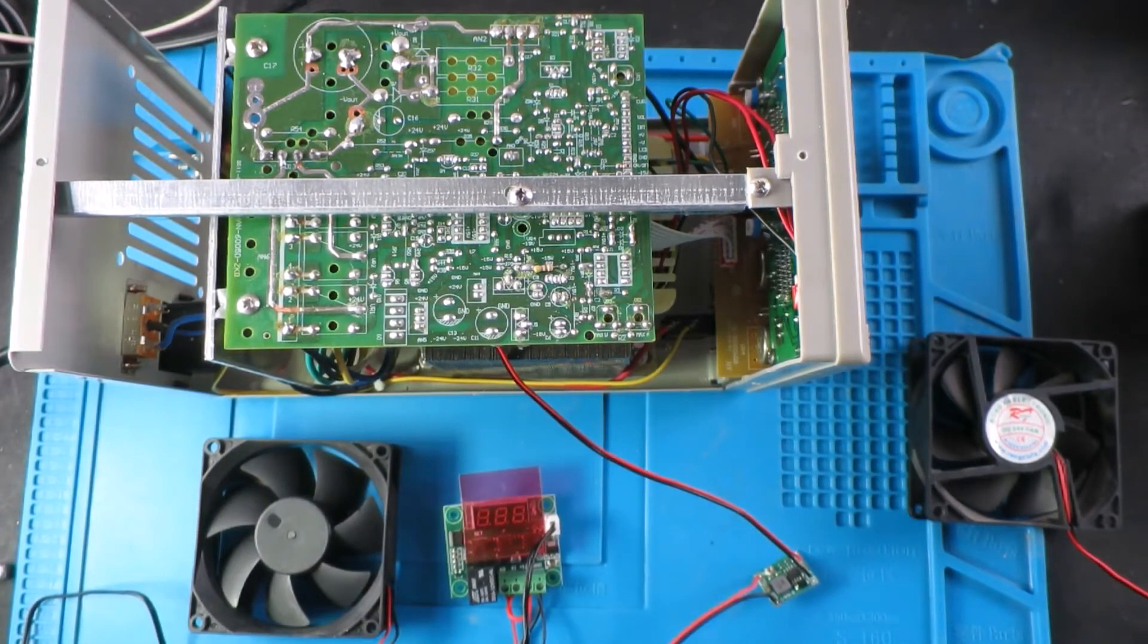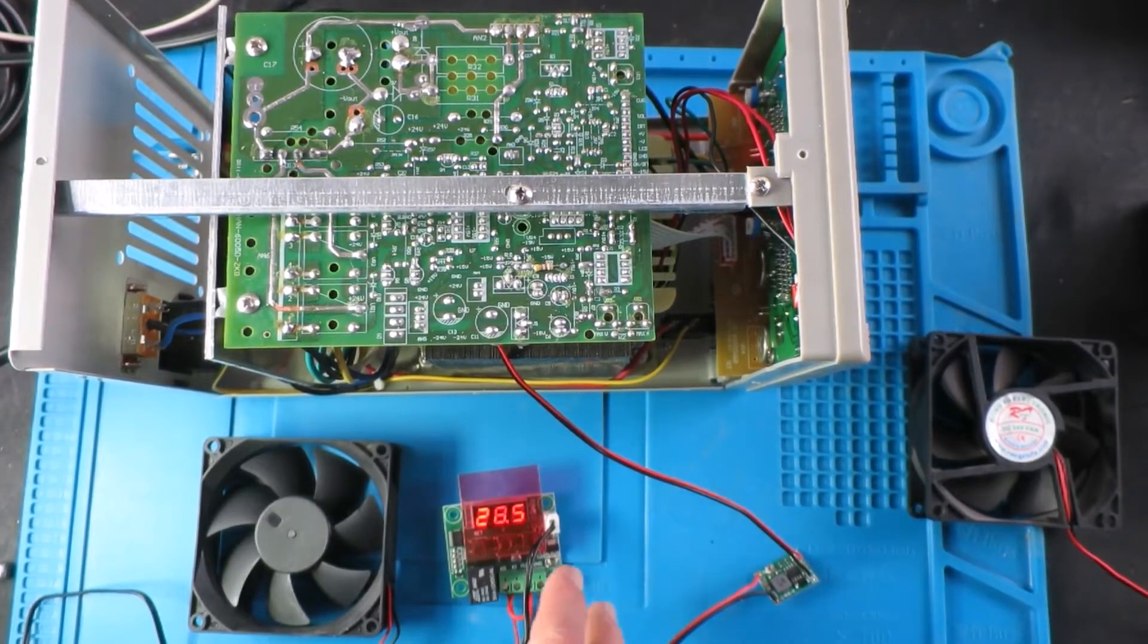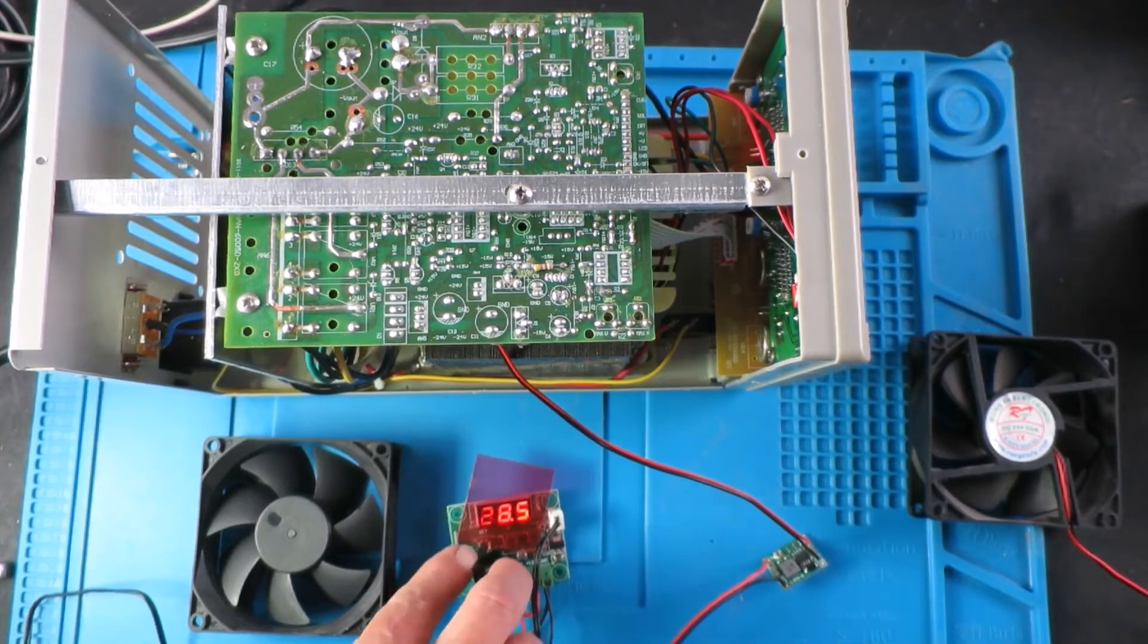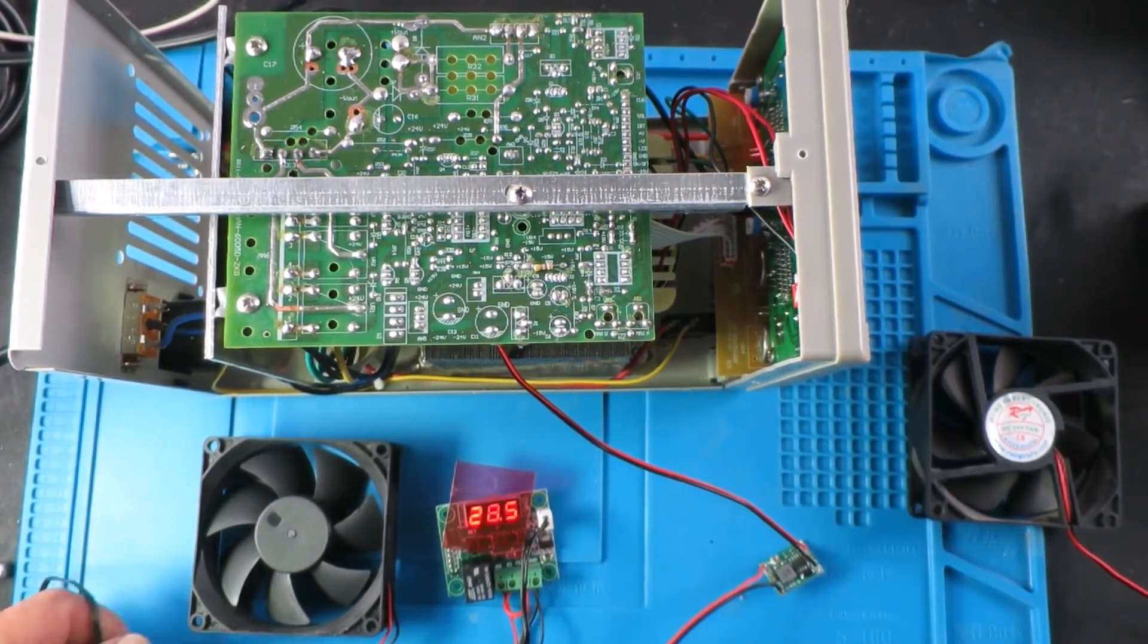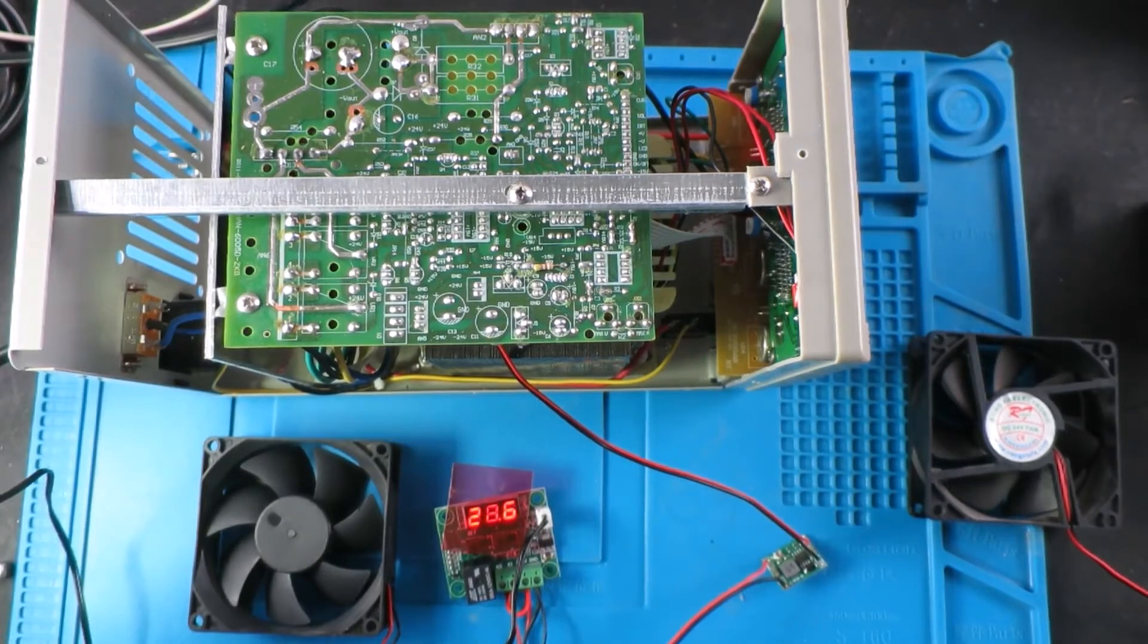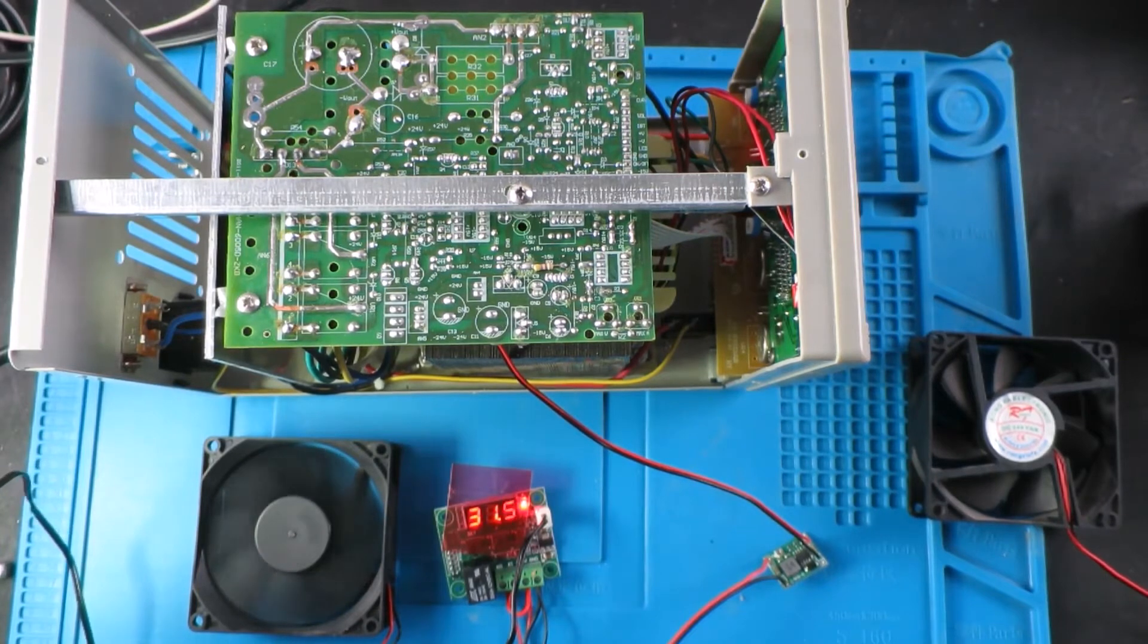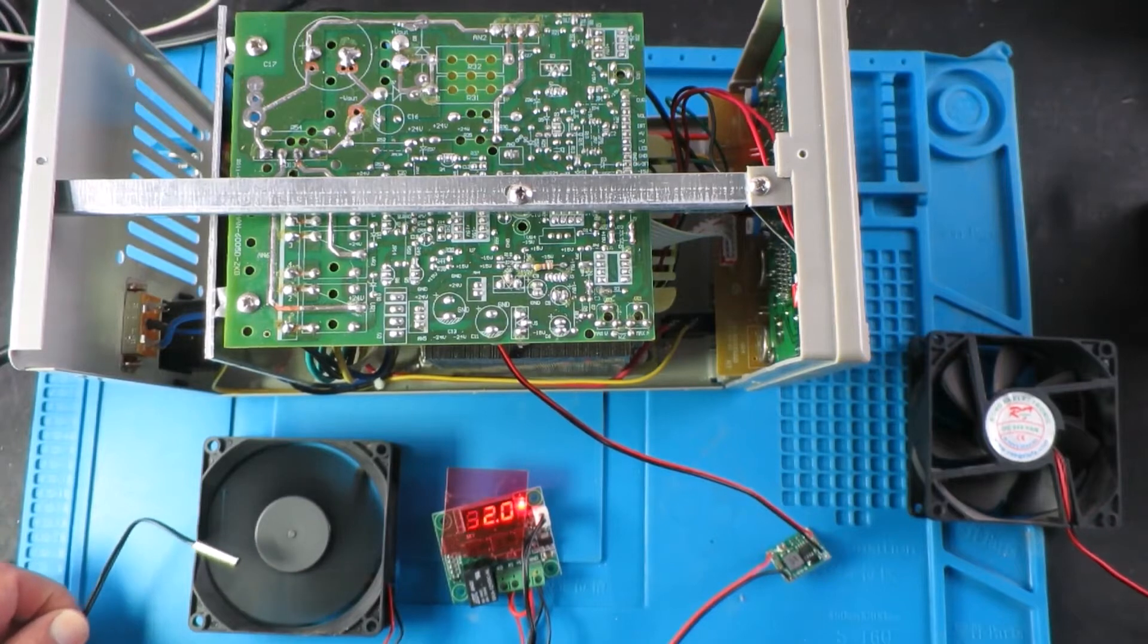So again, if we switch on, I still have this set to 29 plus the two degrees of hysteresis. So now if I hold on to the thermistor and we get to 31 degrees, the fan comes on. So obviously this is going to be on the heat sink, and that's I think going to be much quieter if it comes on at all.